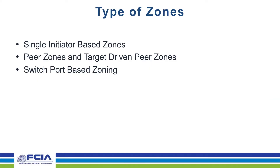The three types of zones that we can create and are most popular are single-initiator-based zones, peer zones, and target-driven zones, and of course the switch-port-based hard zoning that AJ talked about.